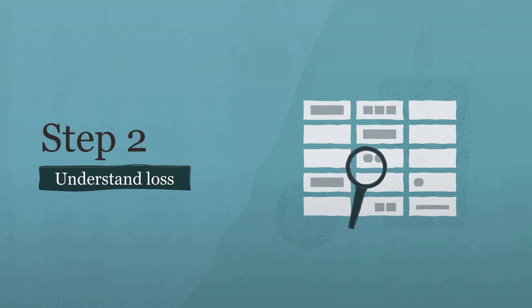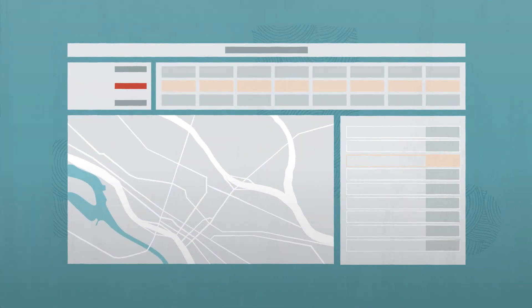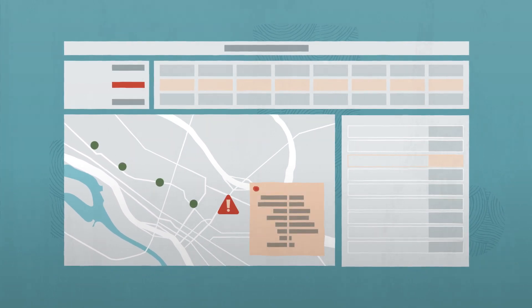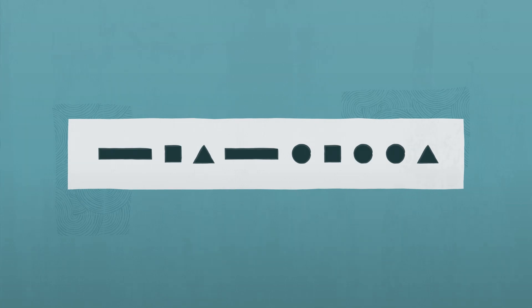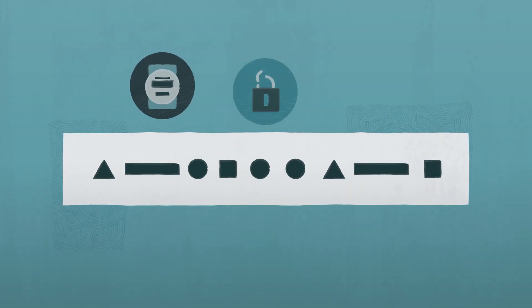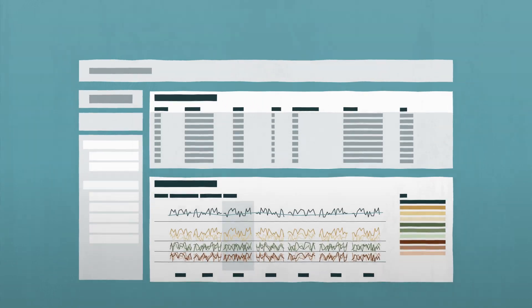Understand loss. Oracle's multi-layered analytics turn datasets into powerful dashboards that expose patterns of loss for investigation. Specialized algorithms designed to detect meter failures, theft, and leaks help utilities understand sources of loss across their networks.